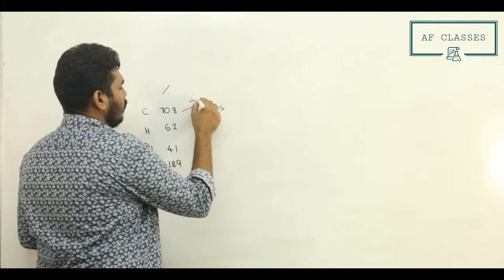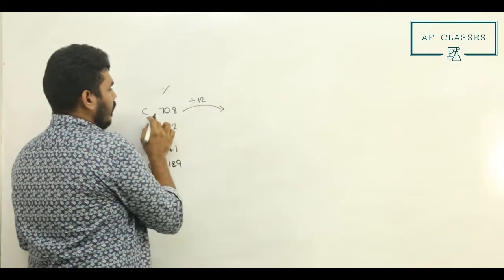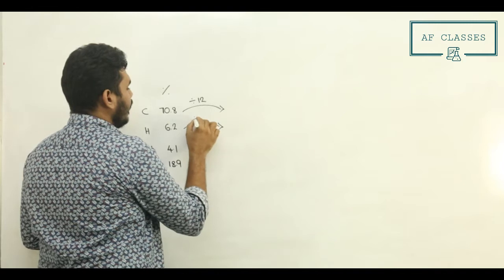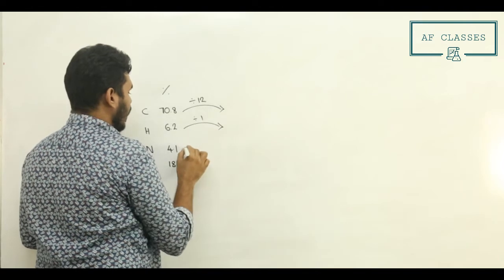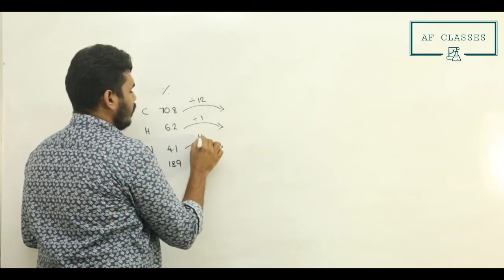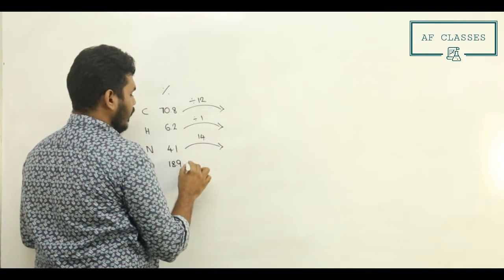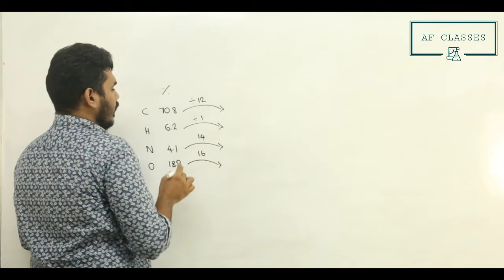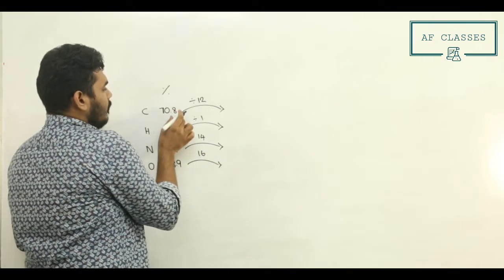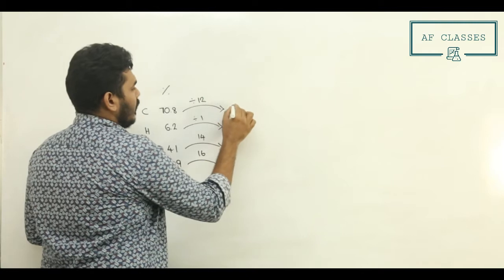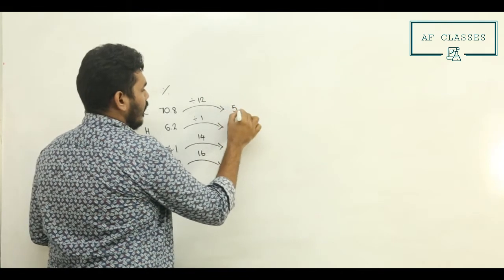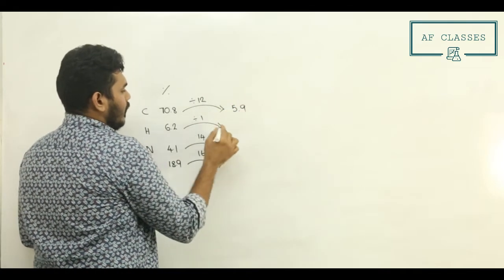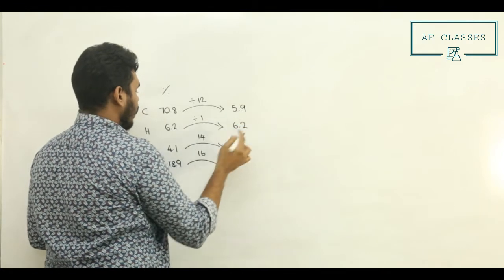We divide each percentage by the atomic mass. Carbon is 12, Hydrogen is 1, Nitrogen is 14, Oxygen is 16. So: 70.8 divided by 12 gives approximately 5.9, and 6.2 divided by 1 gives 6.2.